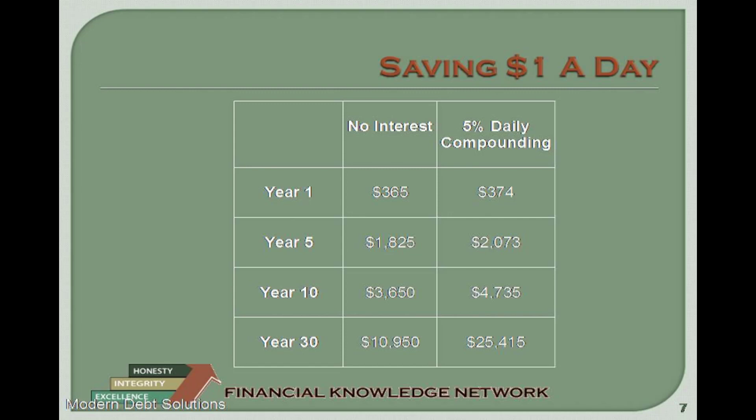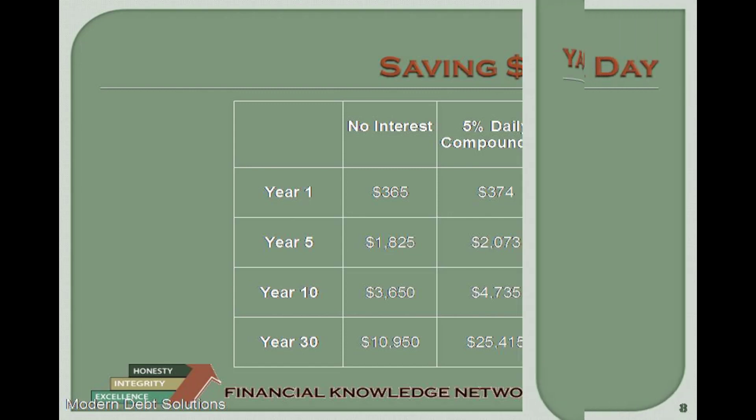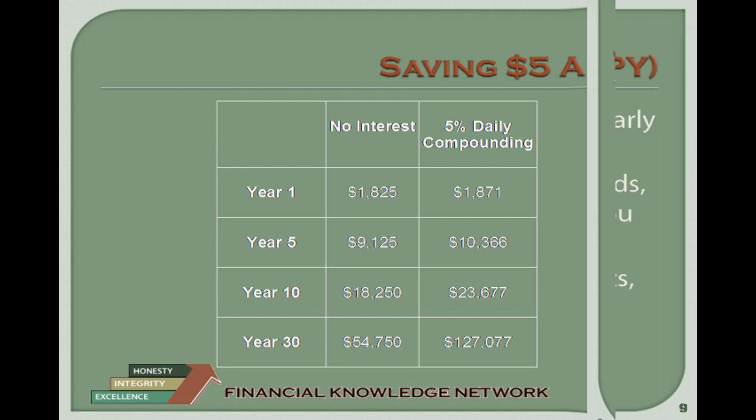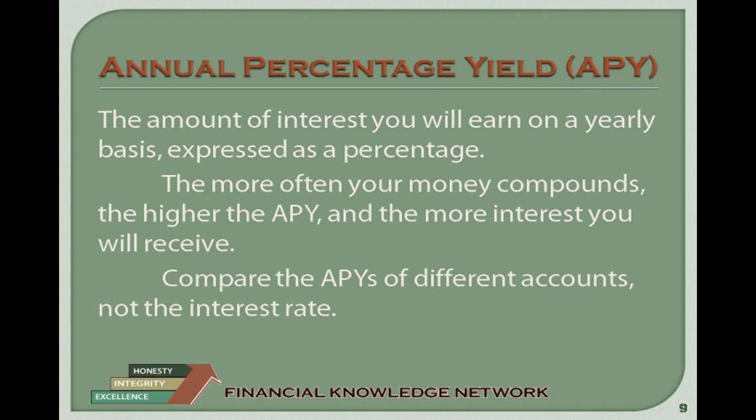A chart illustrates what happens if you invest $1 every day with 5% daily compounding — over time, the value of interest can have a huge impact on wealth accumulation. Similarly, investing $5 every day with 5% daily compounding shows you can accumulate a tremendous amount of money with even a minor investment. This also illustrates the amount of wealth accumulation you can expect if you start saving early enough. To understand interest and interest rates, you must understand the Annual Percentage Yield, or APY — the critical number in determining the value of an investment. The more often your money compounds, the higher the APY and the more interest you receive. When considering accounts, compare the APY, not just the interest rate, to determine the best investment vehicle for the highest rate of return.